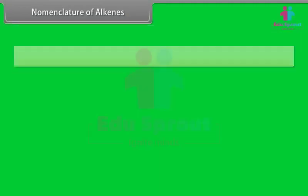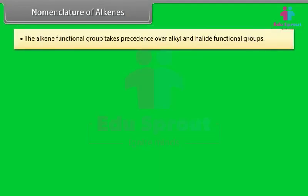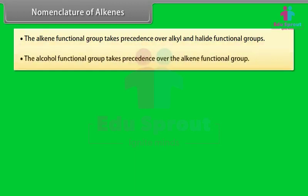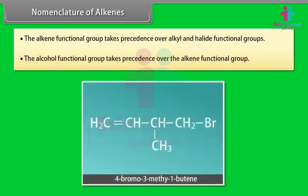Step 5: The alkene functional group takes precedence over alkyl and halide functional groups. Step 6: The alcohol functional group takes precedence over the alkene functional group. For example, 4-bromo-3-methyl-1-butene.